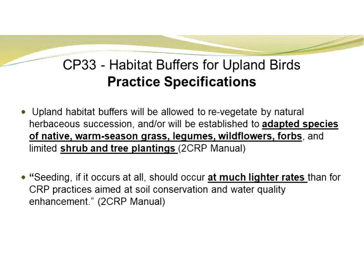Also in the policy, it says seeding, if it occurs at all, should occur at much lighter rates. We are talking about early successional species — we are not looking for a thick stand of grass. The CP33 policy is specifically setting up conditions to create early successional habitat that is diverse and at a rate that will provide open areas along the ground where quail and quail chicks and other grassland birds are able to navigate.